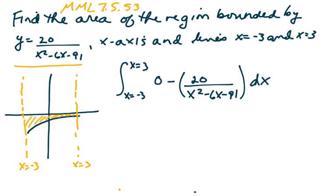I'm going to pull out that constant and drop this from negative 3 to 3, and we're left with 1 over x squared minus 6x minus 91 dx.